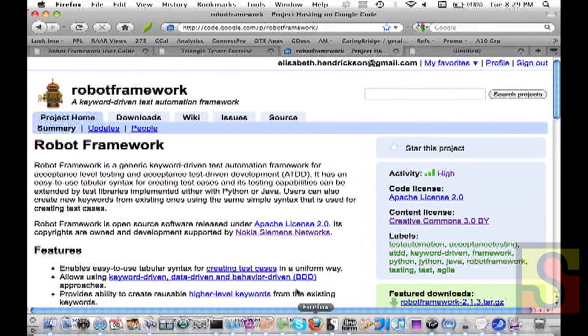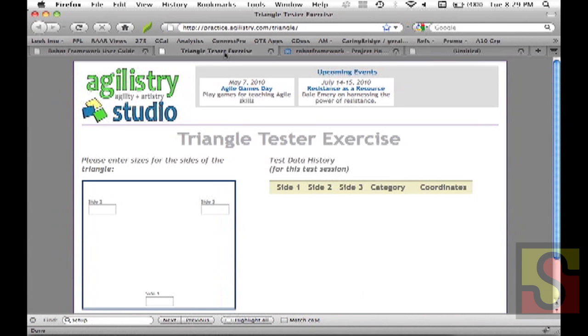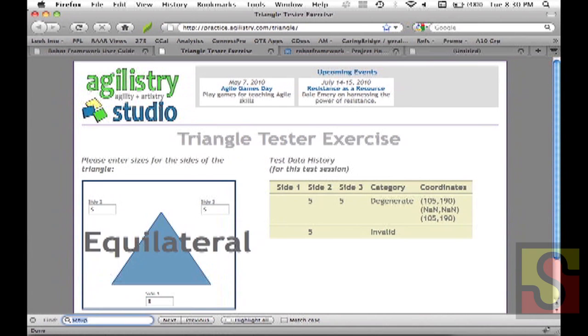This maps to this user interface. This is the thing that we're testing. This is a little demo test thing that I've got up on my website that you can play with if you want to. The way that it works is if we were executing this test manually it would look like this and we'd see the type of triangle.